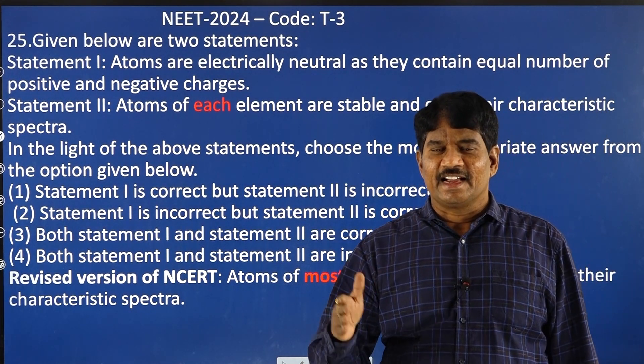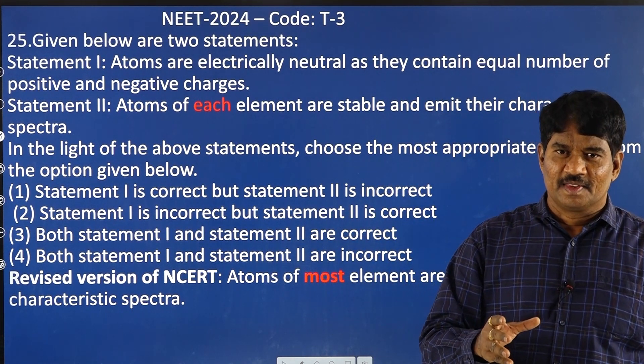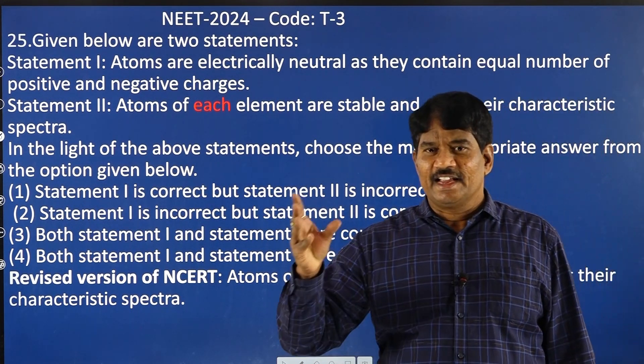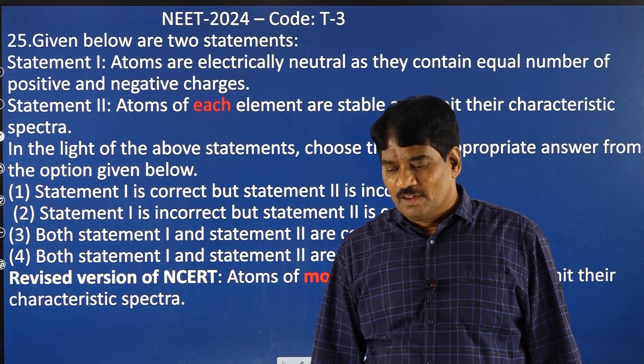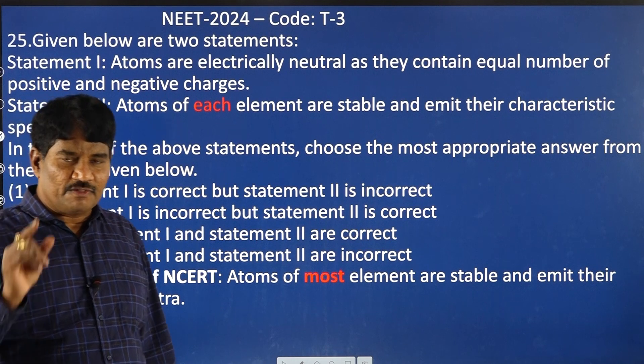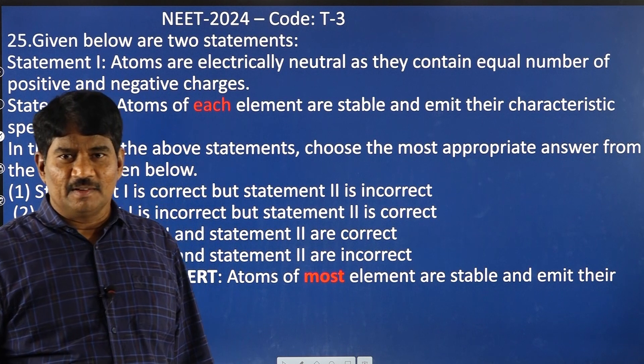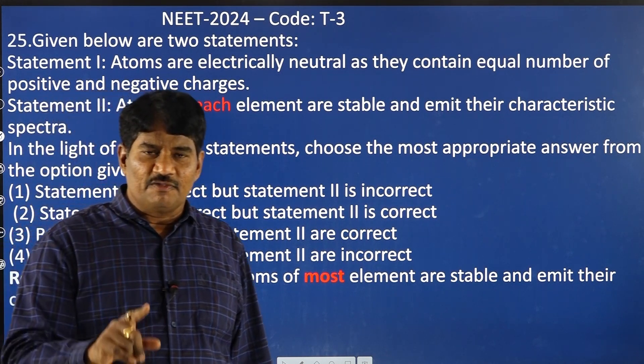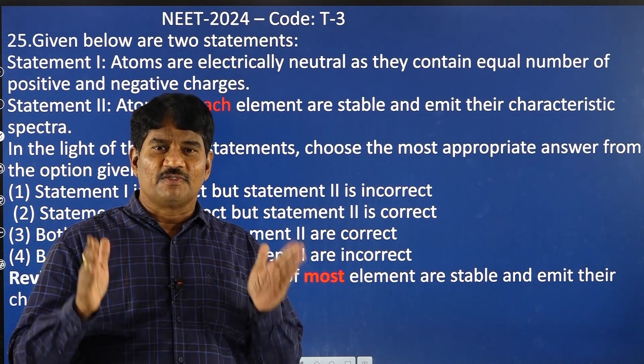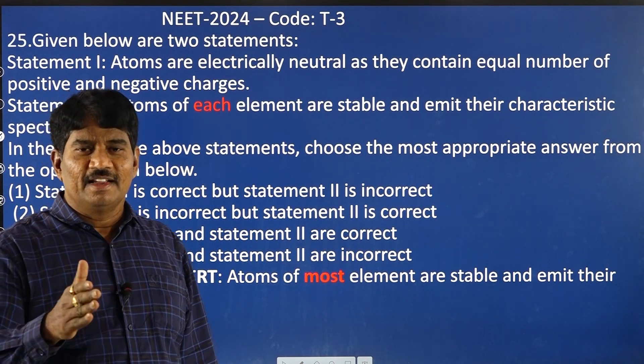If we consider this A category seats and the number of aspirants, the possibility ratio for getting into a medical college is one in 45. That means for every 45 students who are competing or writing the NEET examination, there is a possibility for only one student to get into the medical college. Out of the 45 aspirants, one aspirant will be getting into the medical college in A category.